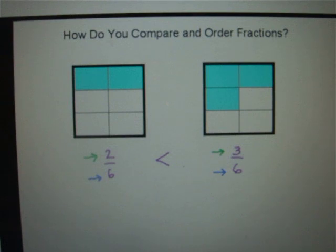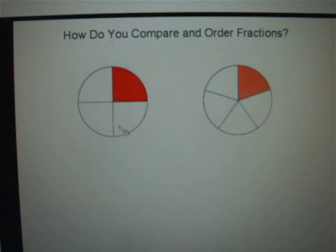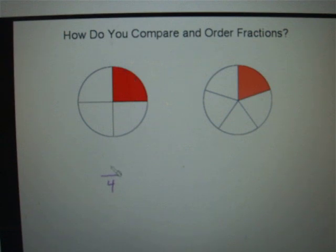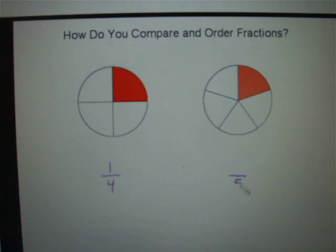Now let's compare two fractions whose denominators are different. This time we have two circles. The circle on the left is divided into four equal sections, so the denominator is 4, and one of those sections is shaded, so the numerator is 1 — this picture is showing us the fraction 1/4. The circle on the right is divided into five equal sections, so the denominator is 5, and one section is shaded, so the numerator is 1 — this circle shows us the fraction 1/5.